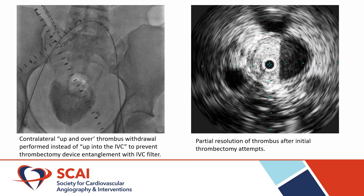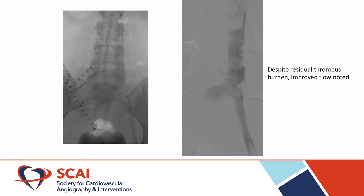As the patient had an IVC filter, we did not advance the ClotTriever device up into the inferior vena cava for the risk of getting entangled with the filter. Instead, we used the up-and-over technique, as shown here, to perform contralateral and ipsilateral thrombus withdrawal. The intravascular ultrasound image on the right shows the partial resolution of thrombus within the left external iliac vein.